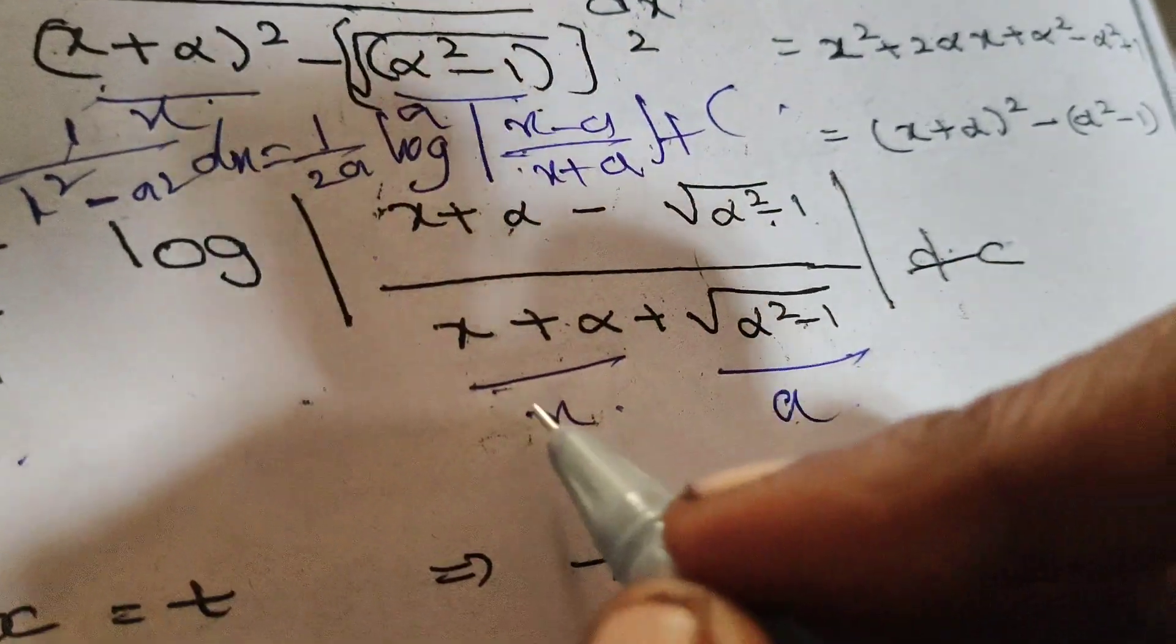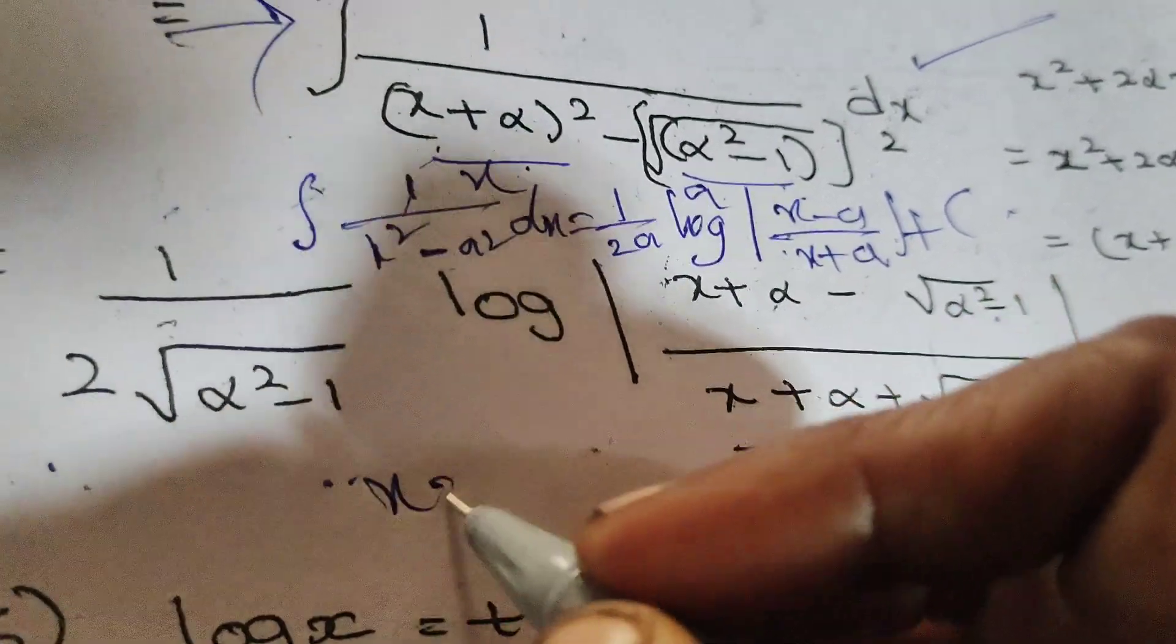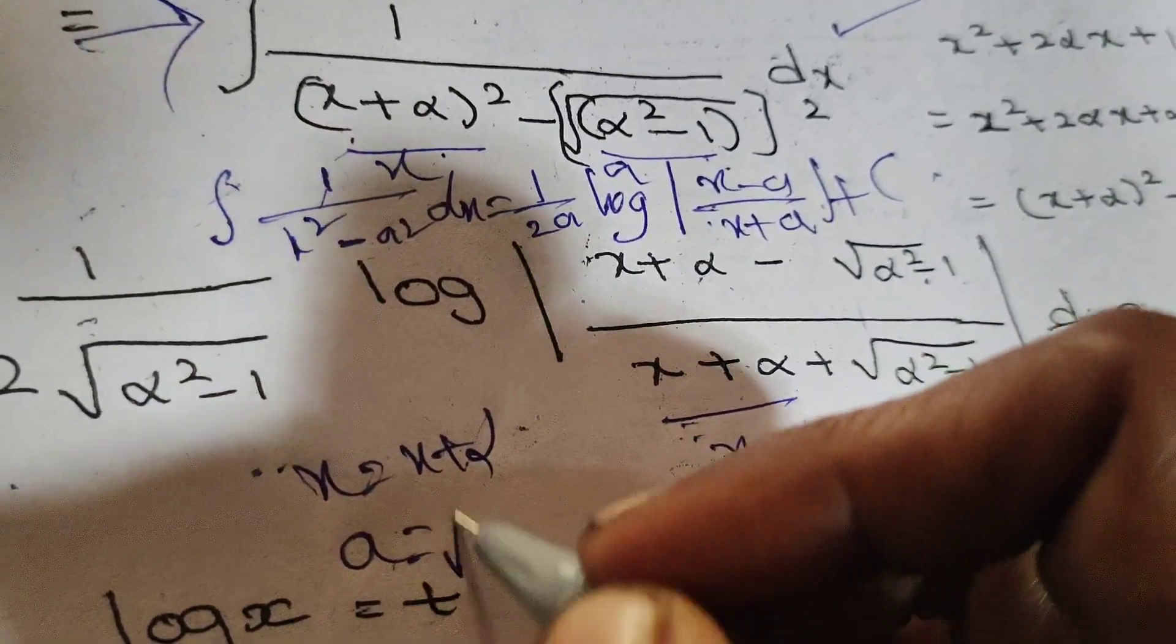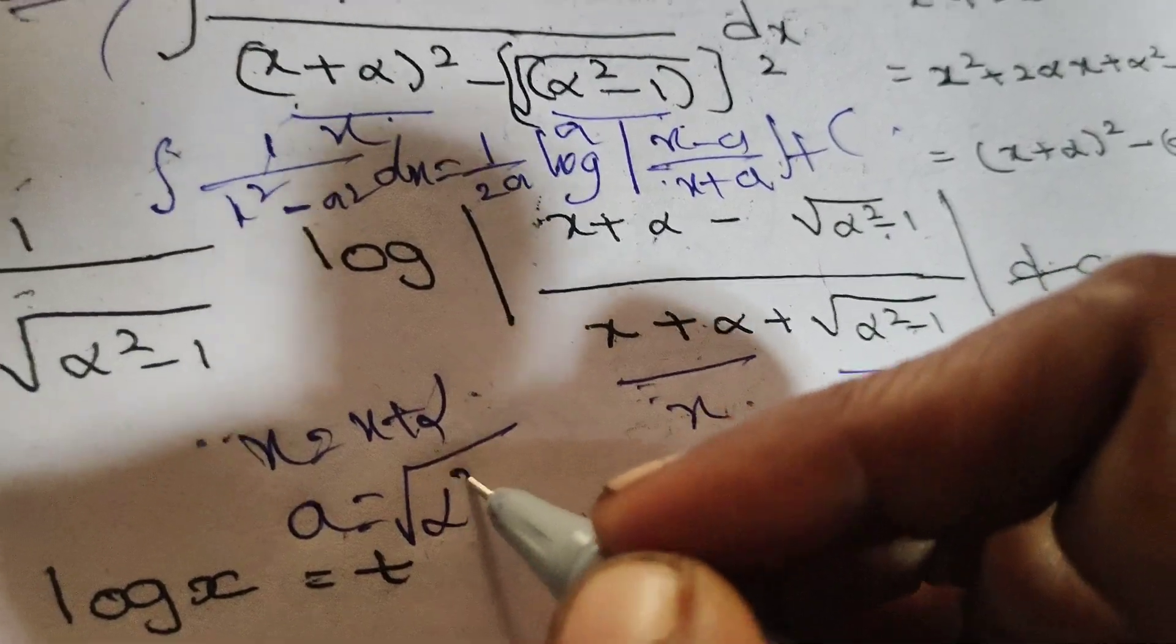Therefore, applying this formula x minus y by x plus y. Here, x means x plus alpha, a means root of alpha square minus 1.